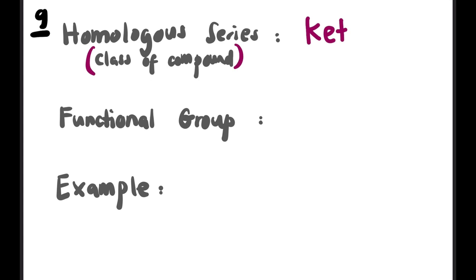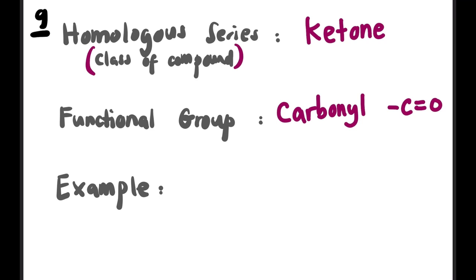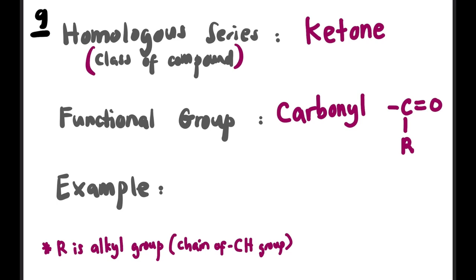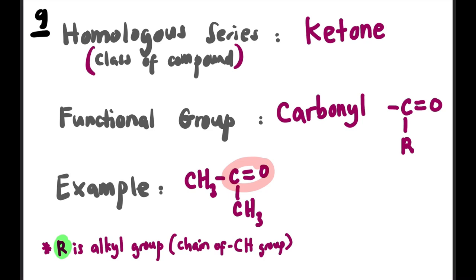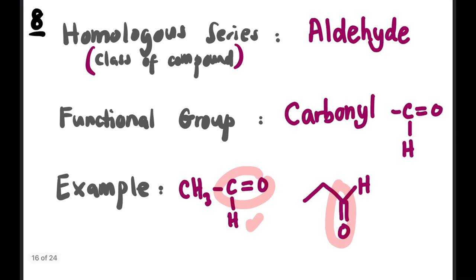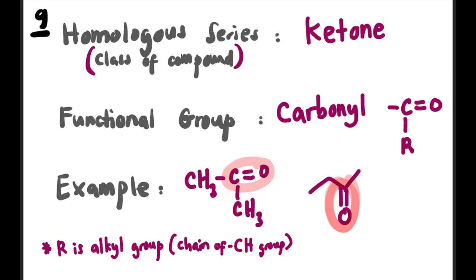The ninth homolog series is ketone. Its functional group is also carbonyl (C=O), like aldehyde — but the difference is that instead of H at the end, there is an R group (an alkyl chain). For example, CH₃–C(=O)–CH₃: the two CH₃ groups on either side are the R groups. Circle and label C=O as carbonyl. For ketone, it is C=O only, whereas aldehyde is C=O with H.